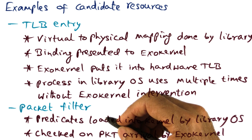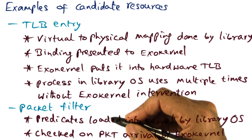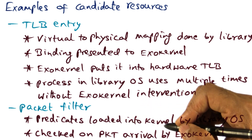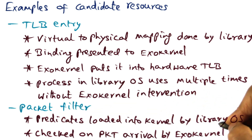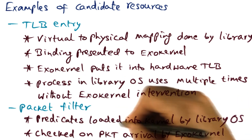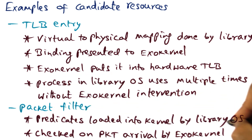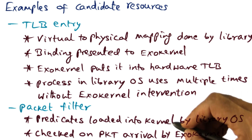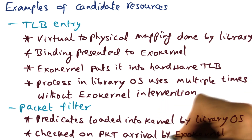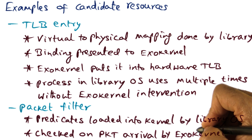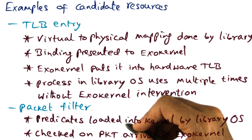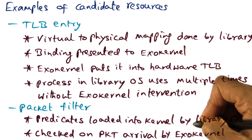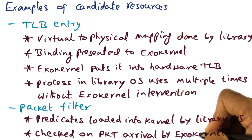Here is another example of a candidate resource. Let's say that the operating system wants to install a packet filter that needs to be executed every time a network packet arrives on behalf of a library operating system. Predicates for looking at this incoming packet are loaded into the kernel by the library operating system. Now this is a heavy duty operation because you're doing it with the help of exo-kernel. But once those predicates have been loaded into exo-kernel, on every packet arrival, exo-kernel will automatically check it using those predicates. So these are examples of candidate resources that tell you that establishing the binding may be expensive, but using the binding once established does not incur the intervention by exo-kernel, and therefore it can happen at hardware speeds.